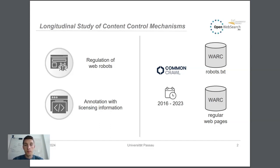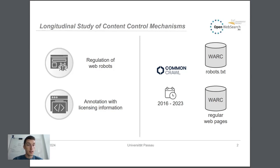For example, delivered HTML documents may contain machine-readable license-related semantic markup that indicate the terms and conditions under which the content is allowed to be used by any robotic data consumer.